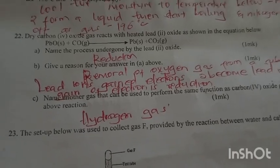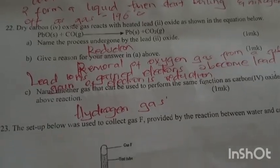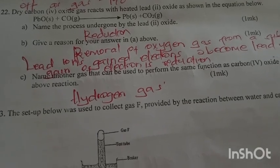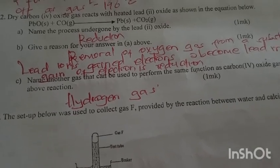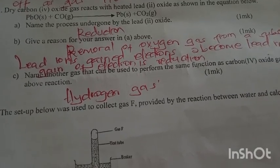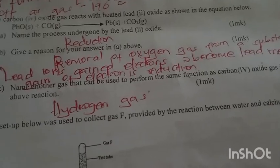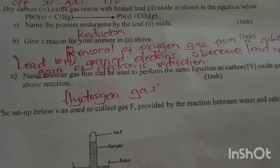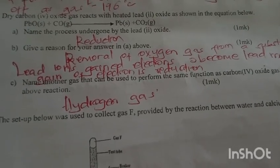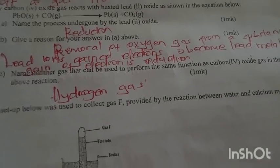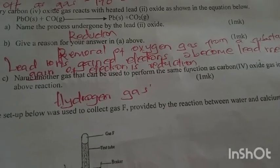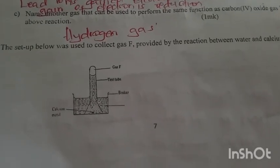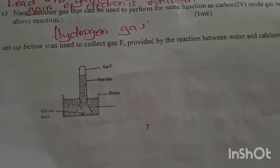Dry carbon dioxide gas reacts with heated lead oxide. Name the process undergone by lead oxide. That's reduction. Reduction is removal of oxygen from a substance. We can also argue that lead ions gain electrons to become lead metal, which is gain of electrons, said to be reduction. Name another gas that can be used to perform the same function as carbon dioxide in the above reaction. Hydrogen gas.